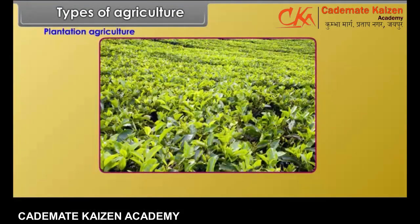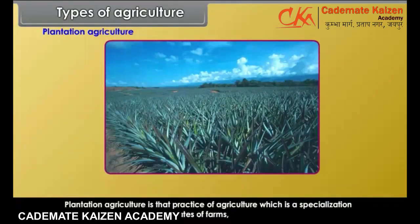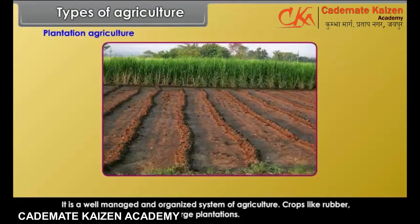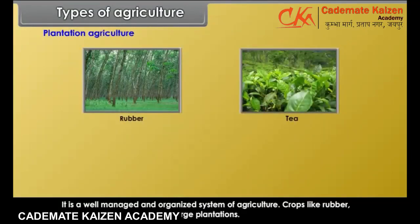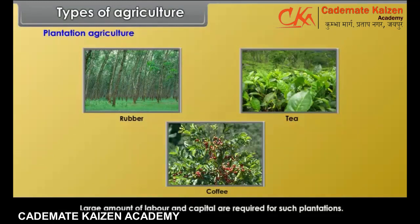Plantation agriculture is basically a commercial type of farming and a monoculture. It is found in the tropical region. Plantation agriculture is a specialization of a single crop over large estates or farms where most of the work is done on a scientific basis. It is a well-managed and organized system of agriculture. Crops like rubber, tea and coffee are grown on large plantations. Large amounts of labor and capital are required for such plantations.